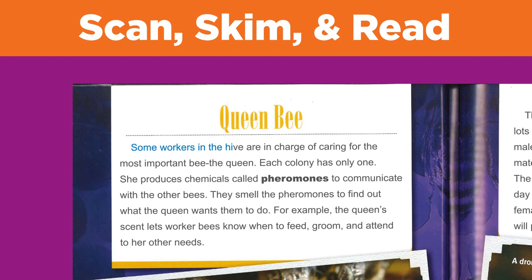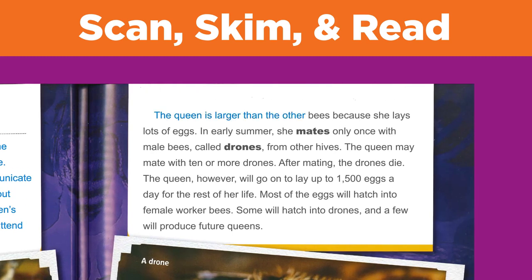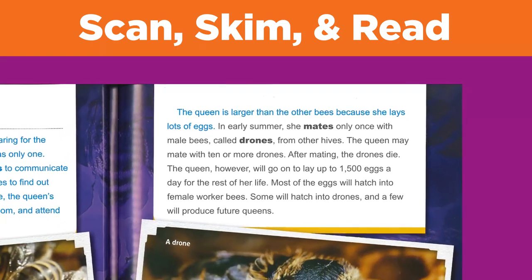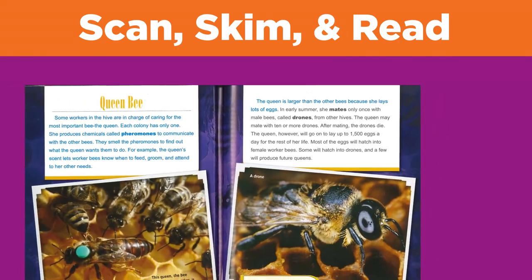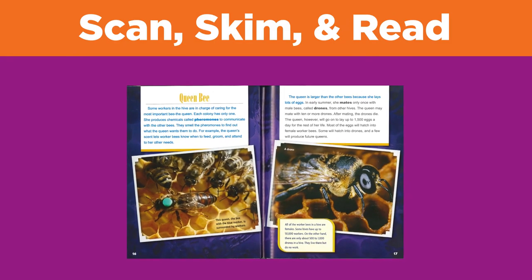Some workers in the hive are in charge of caring for the most important bee — the queen. Each colony has only one. She produces chemicals called pheromones to communicate with the other bees. They smell the pheromones to find out what the queen wants them to do. For example, the queen's scent lets worker bees know when to feed, groom, and attend to her other needs. The queen is larger than the other bees because she lays lots of eggs. Did the section help answer your question about the queen's role in the hive? Did it answer any of your other questions?